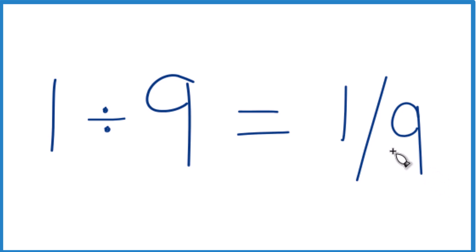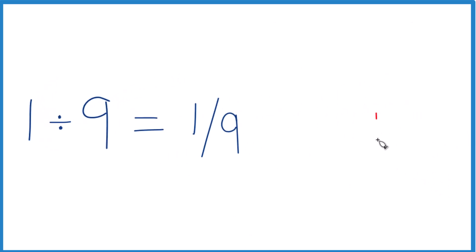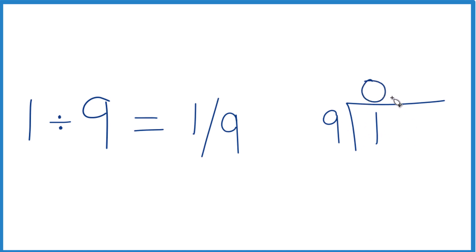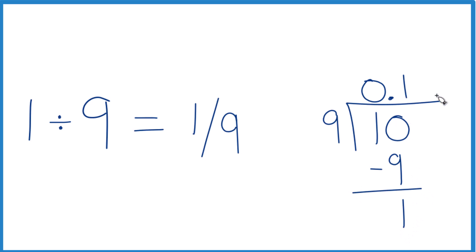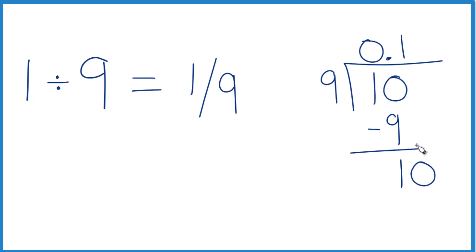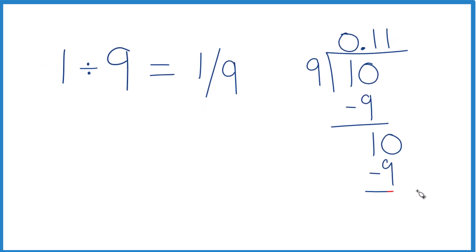You could also write it as a decimal. To do that, you would take 1 and see how many times 9 goes into 1. So we're going to do this by long division. 9 doesn't go into 1, but if we put a zero and a decimal point here, we can write this as 10. 1 times 9 is 9, we subtract and we get 1. So we can move over 1, call this 10. 1 times 9 is 9, subtract, and we get 1.